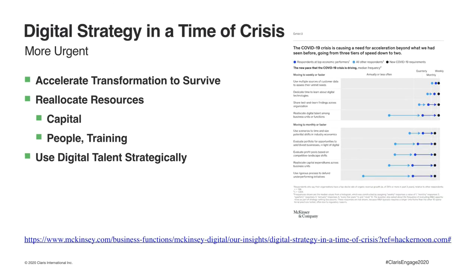McKinsey recently released a paper called 'Digital Strategy in a Time of Crisis' because we are in the middle of the COVID-19 crisis. However, the message is timeless. What they found was how fast businesses accelerated transformation to survive — reallocating resources quickly, capital, training people, using digital talent strategically across multiple areas, digital collaboration, productivity, e-commerce, digital payments. They did this because it was urgent to survive. Think about how it would have benefited these businesses if they had digitally transformed before the crisis.